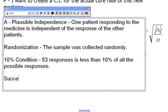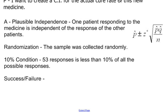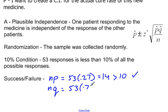The last one is success failure condition. And we need to make sure that we have at least 10 successes and at least 10 failures. Now this one I'll do, I'll go ahead and write out. We need to check n times p, which is equal to 53 times 0.27. And then that is going to give us 14. So that's greater than 10, which is what we're looking for. And we also need to check n times q, which is 53, times 0.73, which is equal to 39. And that is definitely greater than 10. So that one checks out. So our success failure condition has been satisfied as well.